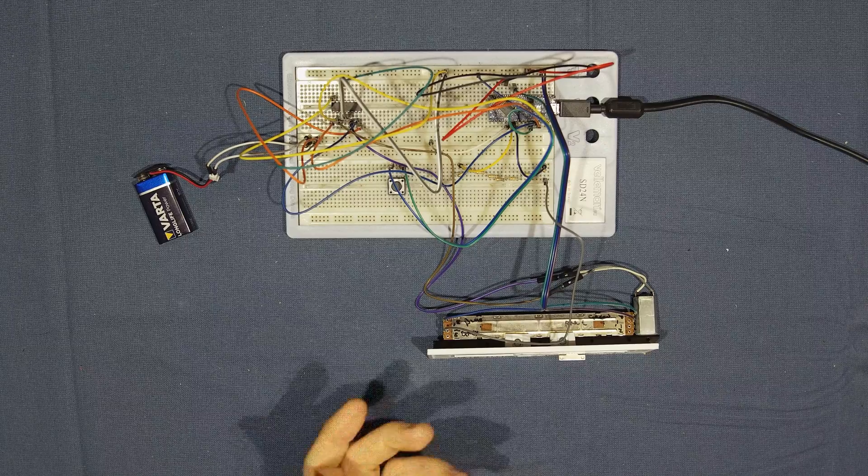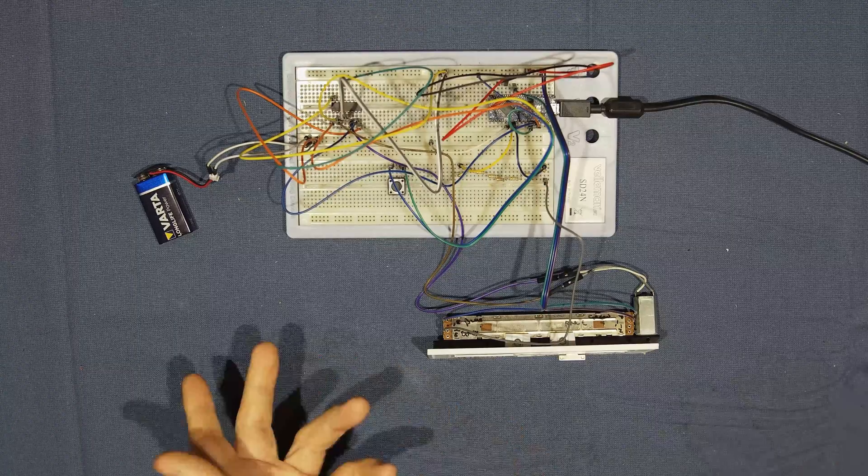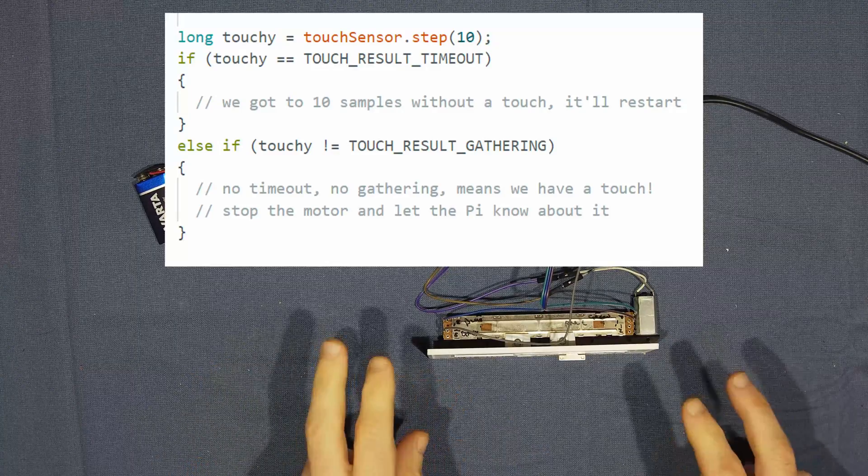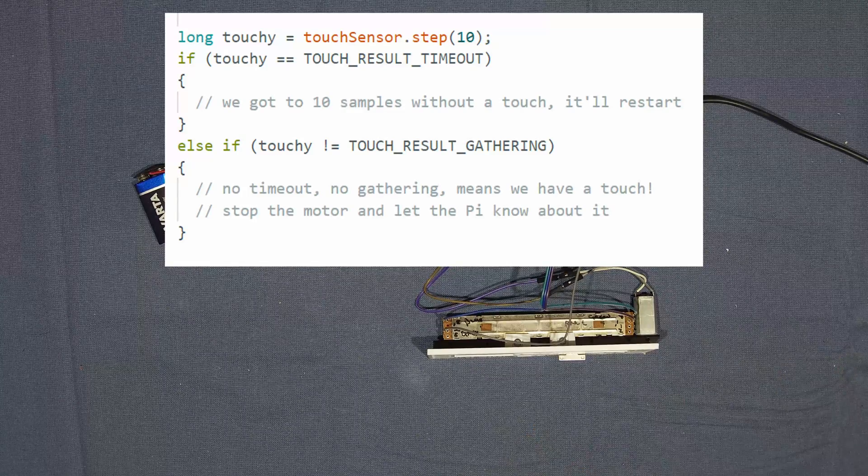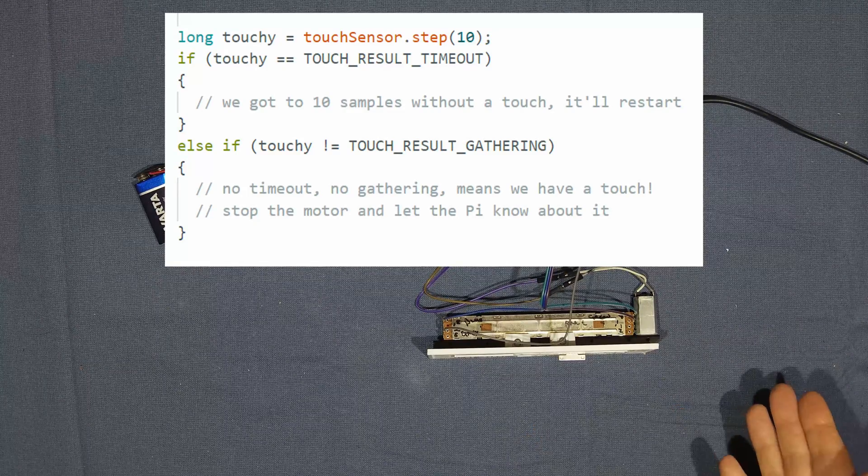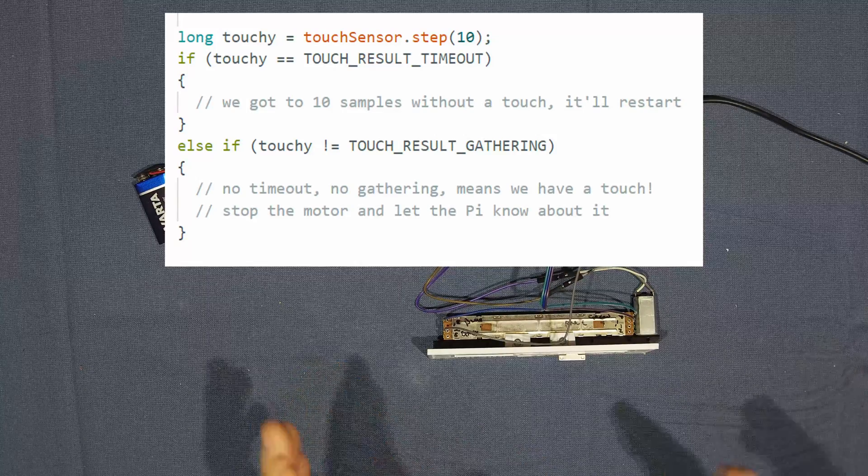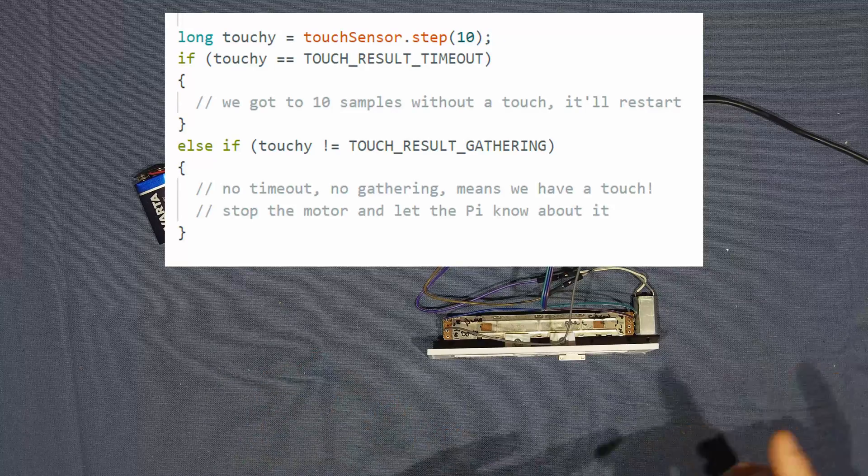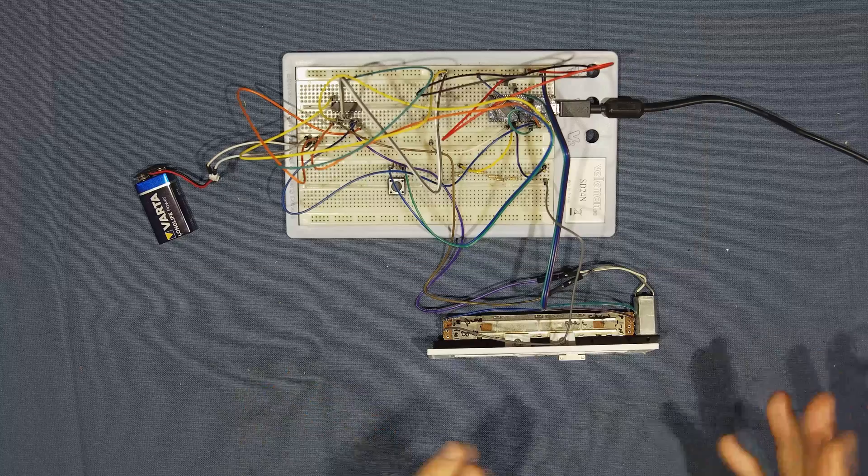So what I decided to do was to change how the capacitive sensor library does this reading, changing the function so it reads a single value, and then returns not done, so that the rest of the loop continues as expected. This continues until the loop is executed, in this case, 10 times, at which point the read function has gathered its 10 samples, has determined if a touch happened, and then returns true if so, resetting the internals regardless. And this seemed to work alright for now.